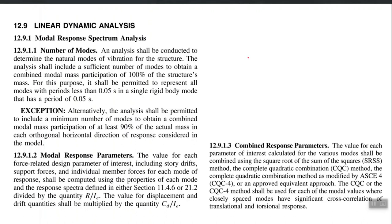The first guideline is about number of modes. Ideally, you should consider all modes — any mode which has any mass participation should be included in the analysis. But the code also provides a threshold: the minimum number of modes should be considered to obtain a combined modal mass participation of at least 90% of the actual mass. For example, if the first mode participates 60%, the second 30%, and the third 1-2%, then the first three modes will fulfill this requirement. ETABS provides the cumulative modal mass up to any certain number of modes.